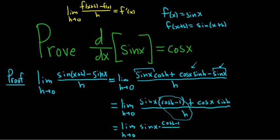minus 1 over h plus, plus and then here we have cosine x times sine h over h.